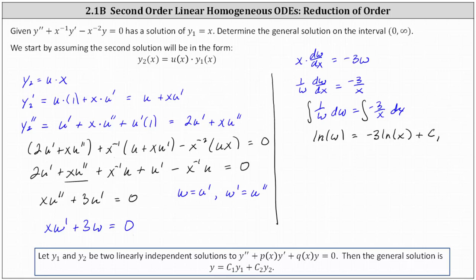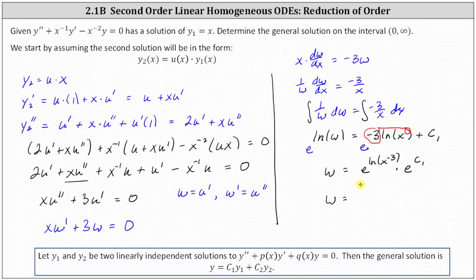Before exponentiating both sides, we apply the power property of logs to negative three·natural log x, moving negative three to the exponent position. Exponentiating both sides with base e: on the left, e to the natural log of w is just w. On the right, e to the natural log of x to the negative three times e to the c₁, where e to the c₁ is just some constant. Simplifying, w equals x to the negative three times that constant, which we call c₂, giving w equals c₂·x to the negative three.